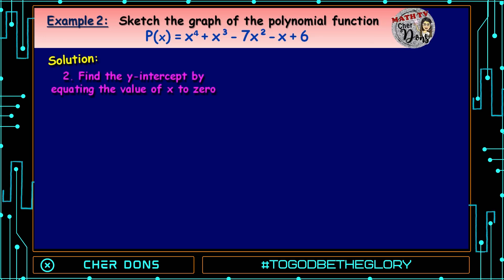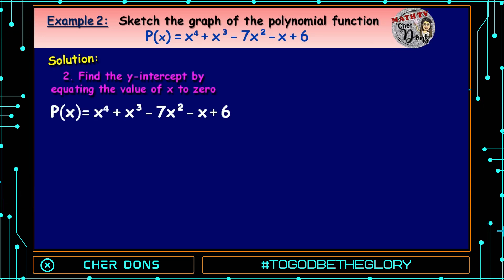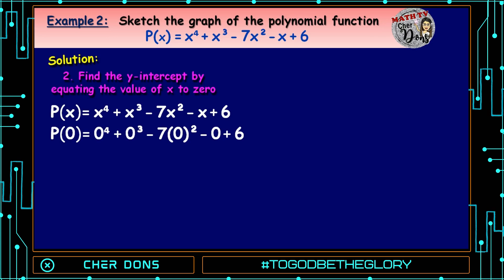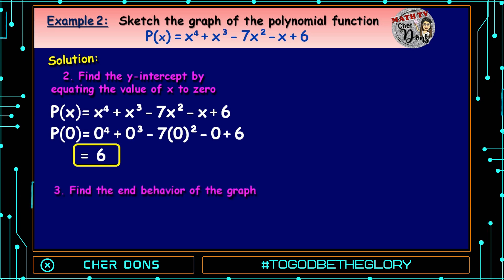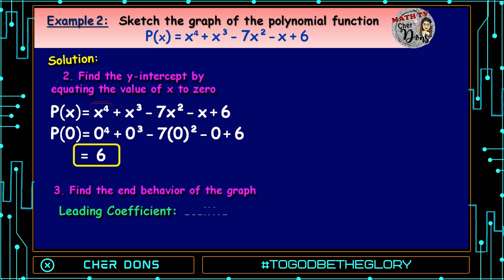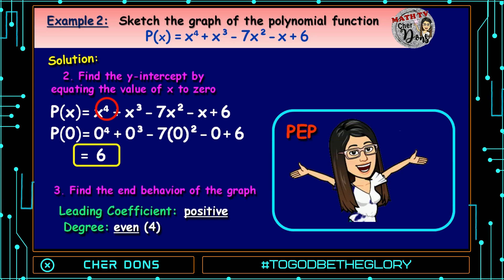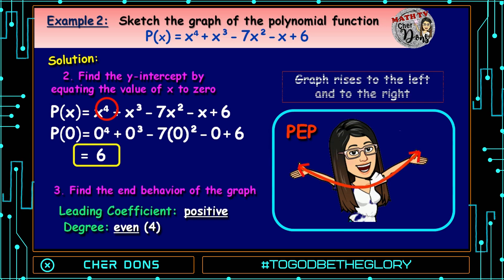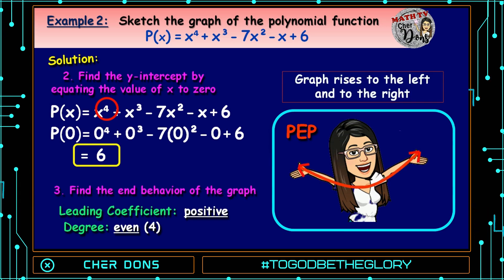For step number 2: finding the y-intercept by equating x to 0. We have 0⁴ + 0³ - 7(0²) - 0 + 6, which equals positive 6. For step number 3: finding the end behavior. The leading coefficient is positive 1, and the degree is even — it's 4. It is PEP, positive even power. So the graph rises to the left and to the right.